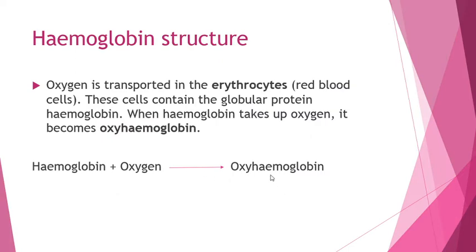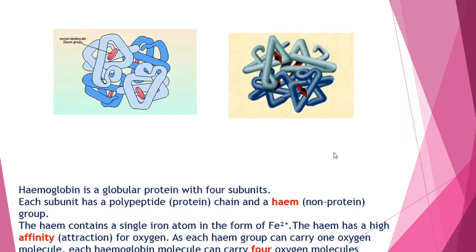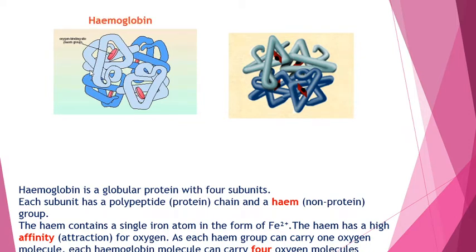We're going to be using the term oxyhemoglobin a lot, because when oxygen is bound to haemoglobin that's what we call it: oxyhemoglobin. Remember, haemoglobin is a globular protein — four separate units, four tertiary proteins joined together to make a quaternary protein. It's also a conjugated protein because in the center it has a non-protein element with an atom of iron, Fe2+. This heme group has an exceptionally high affinity for oxygen. With four tertiary proteins each having its own heme group, that means four molecules of oxygen can combine per haemoglobin.